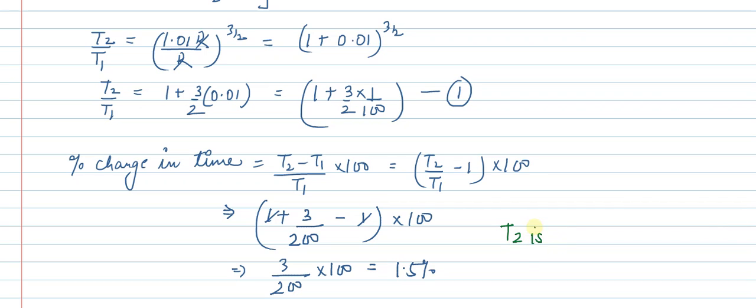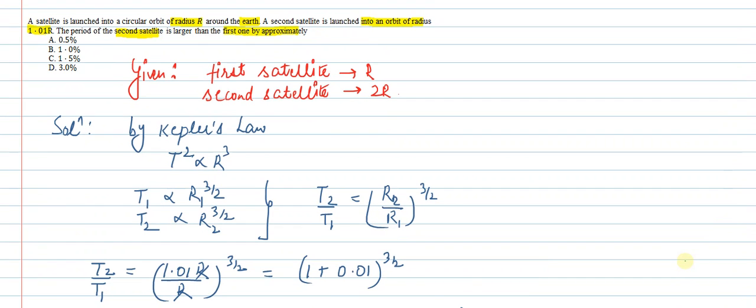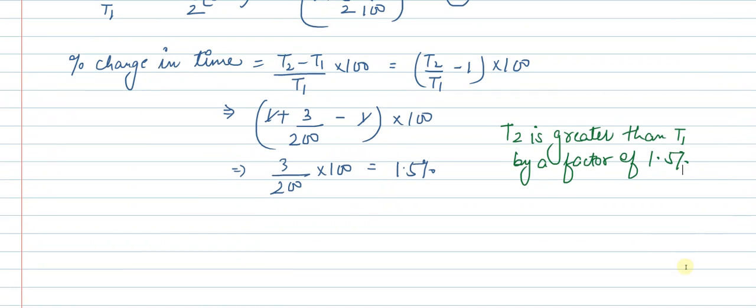T1 by a factor of 1.5%. Okay, let's see which of the options is matching. This is option number C, which is matching with our answer. So we will write option C. Okay, thank you.